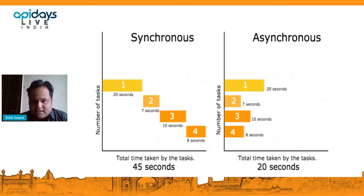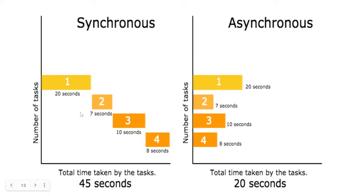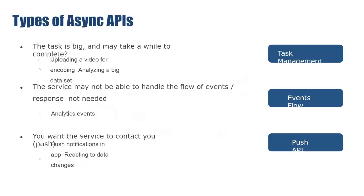Consider a case where downstream systems take variable times: 20 seconds, 7 seconds, 10 seconds, and 8 seconds — totaling 45 seconds synchronously. With asynchronous APIs, all execute in parallel and the total response time equals the maximum time taken by any single downstream system, which is 20 seconds. This demonstrates the key benefit of asynchronous APIs.